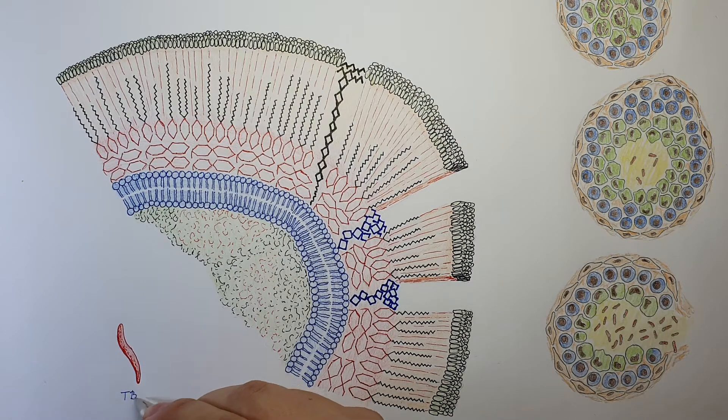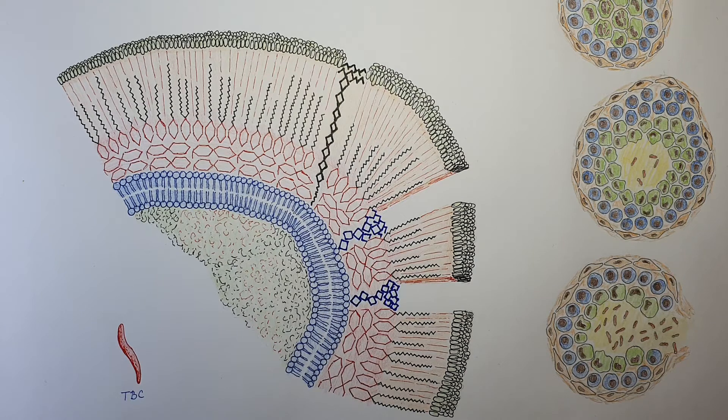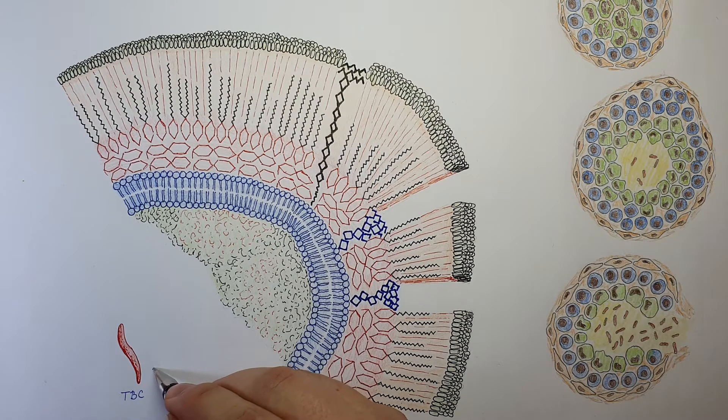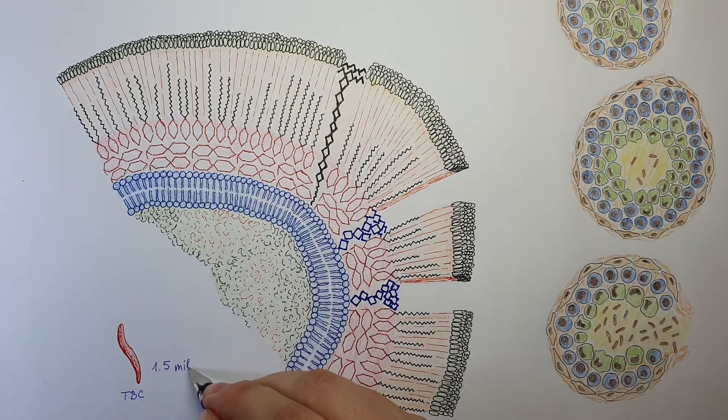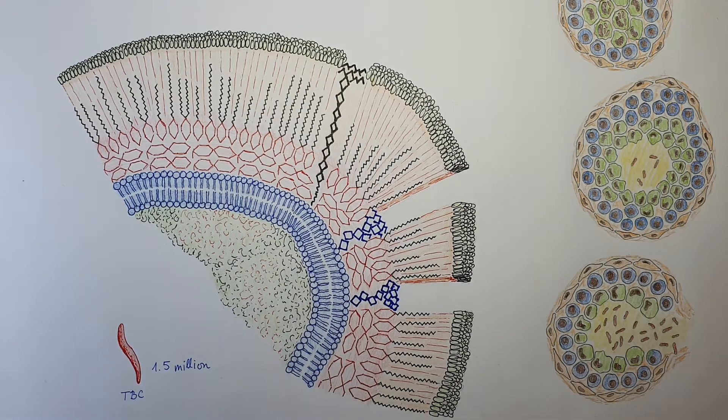TBC is actually a very dangerous bacteria even though we don't hear from it that much. Every year tuberculosis kills about one and a half million people. So this is a big number, but obviously other diseases, non-infectious, kill many more people.